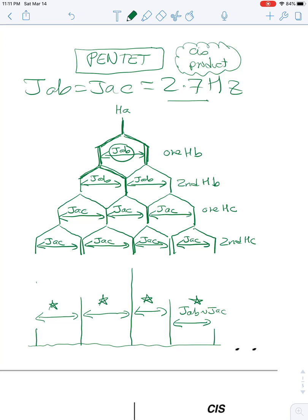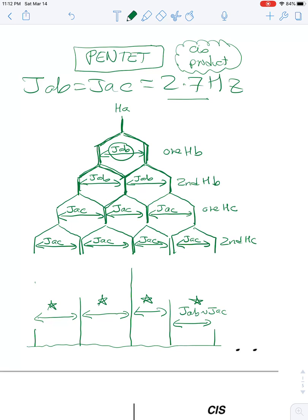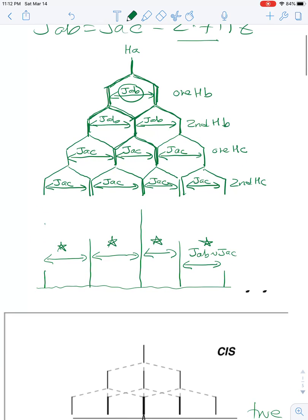This JAB is equal to 2.7 hertz. We just keep repeating that for each of the other three hydrogens. I arbitrarily started with the HBs and then finished with the HCs, but it really doesn't matter because the couplings are all the same. Because the couplings are all the same, they keep meeting at these intersections.